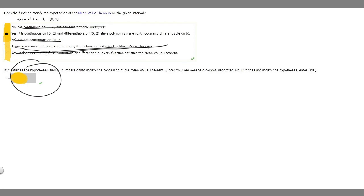So this is going to be the answer to the first part. But let's look at the second one. So if it satisfies the hypotheses, find all numbers c that satisfy the conclusion of the mean value theorem. So how do we do this?